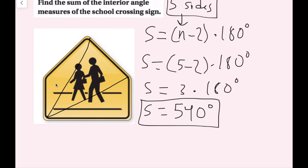Each triangle has an interior angle measure totaling 180 degrees, so this would be 180, 180, and 180. I'm doing the exact same calculation — 180 times 3 — which still gives me 540 degrees. This triangle method will work with all polygons, just as the equation method will. Both will work.